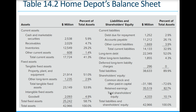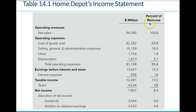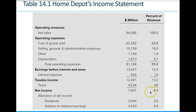Looking at Home Depot's balance sheet, we compare everything to a percentage of assets. On the income statement side, cost of goods sold is 65% of revenue — meaning for every dollar in sales, 65 cents goes to cost of goods, 16 cents to SG&A, 4.8% to taxes, and 1 cent to interest expense. The remaining net income is 8.4% of sales. The balance sheet shows total assets must match total liabilities and shareholders' equity.